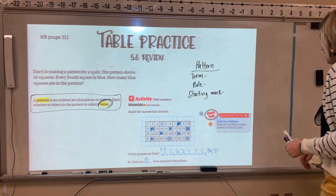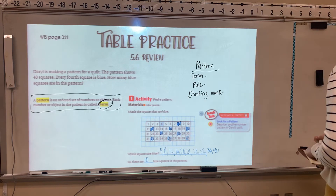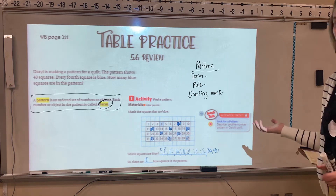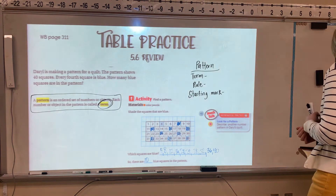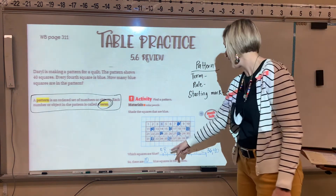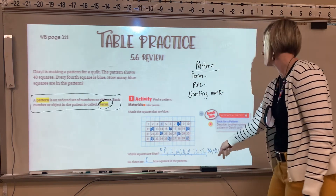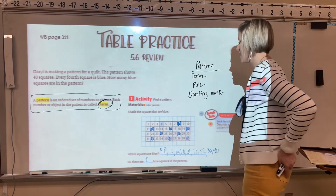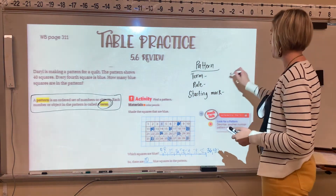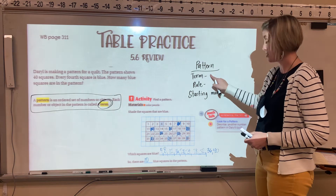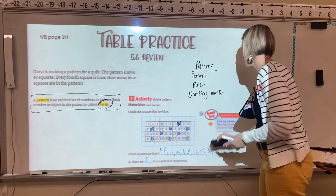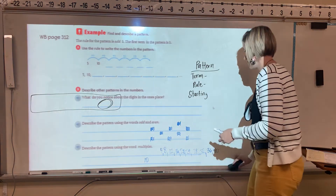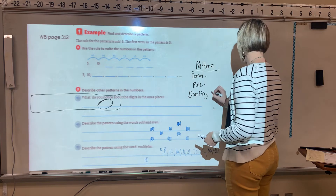Describe another number pattern in Daryl's quilt. All these numbers are even, which means they're all divisible by 2. The ones place repeats itself: 4, 8, 2, 6, 0, 4, 8, 2, 6, 0. In a pattern, you're going to have three things: the terms, the rule, and the starting mark.